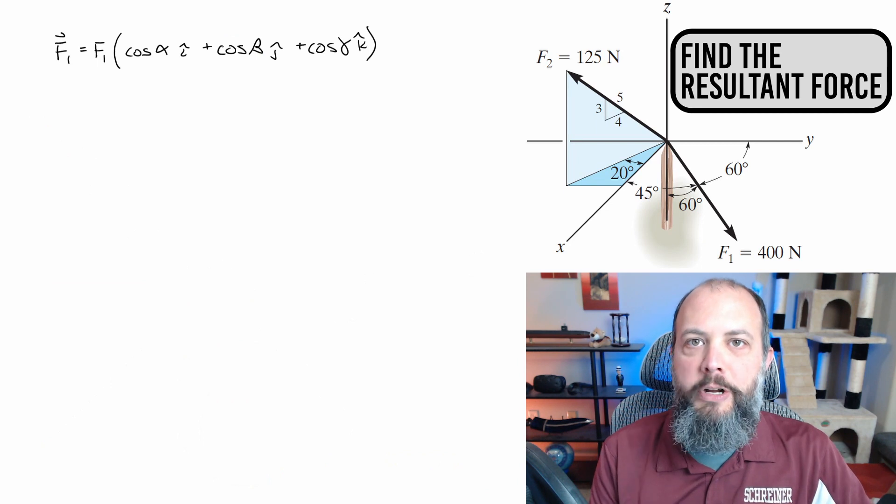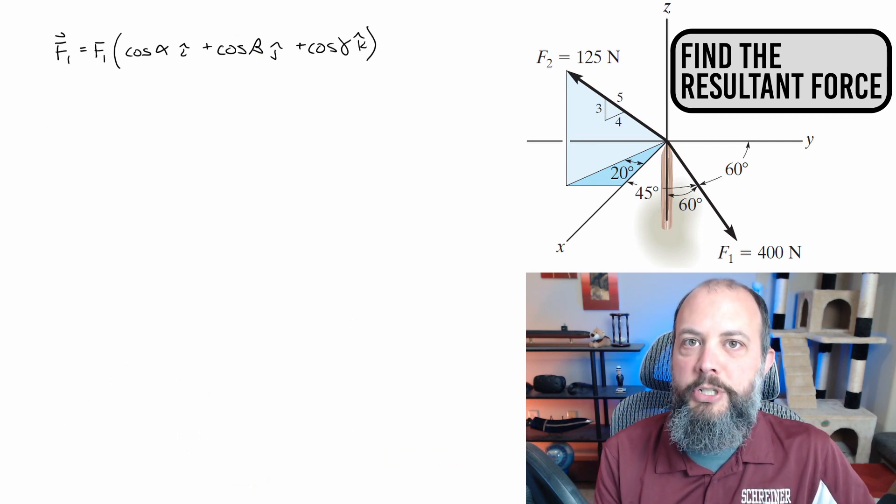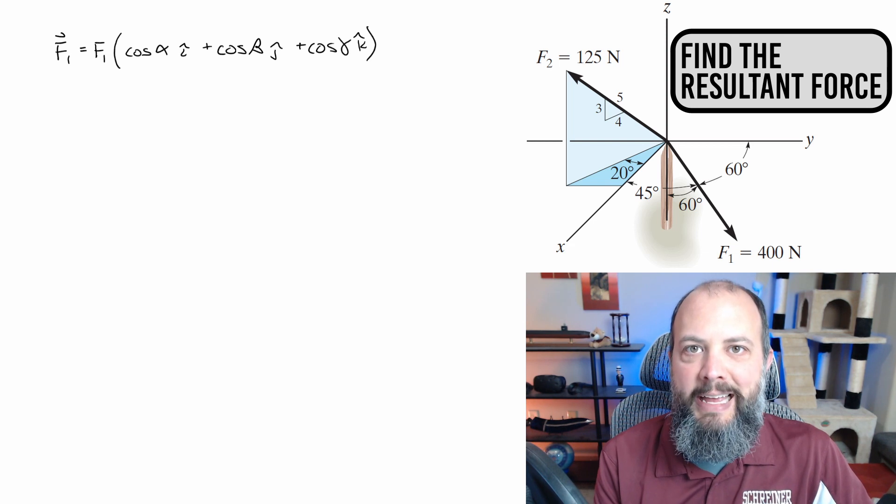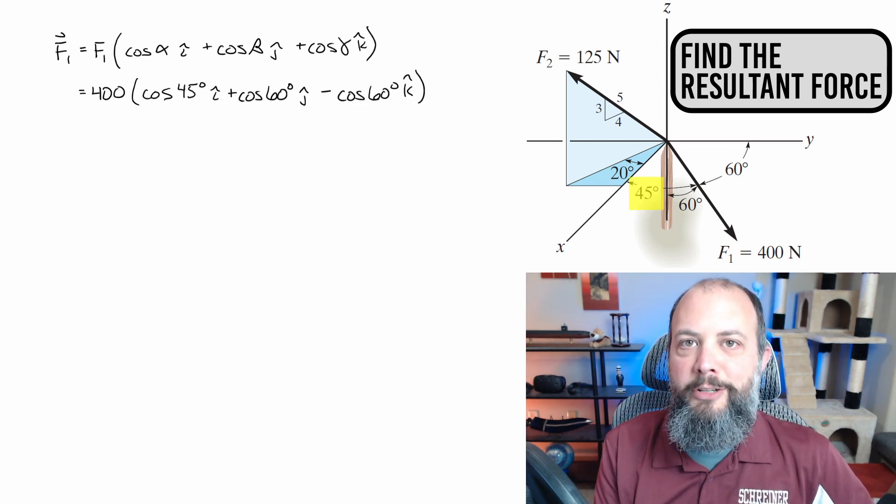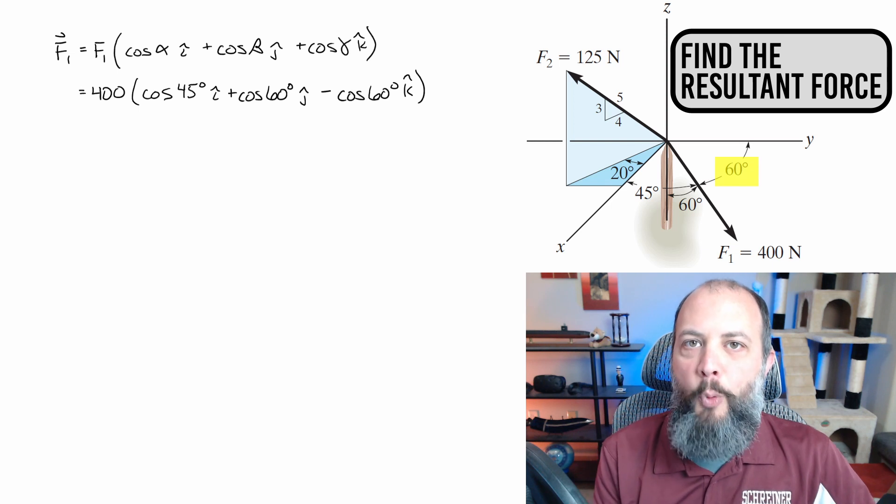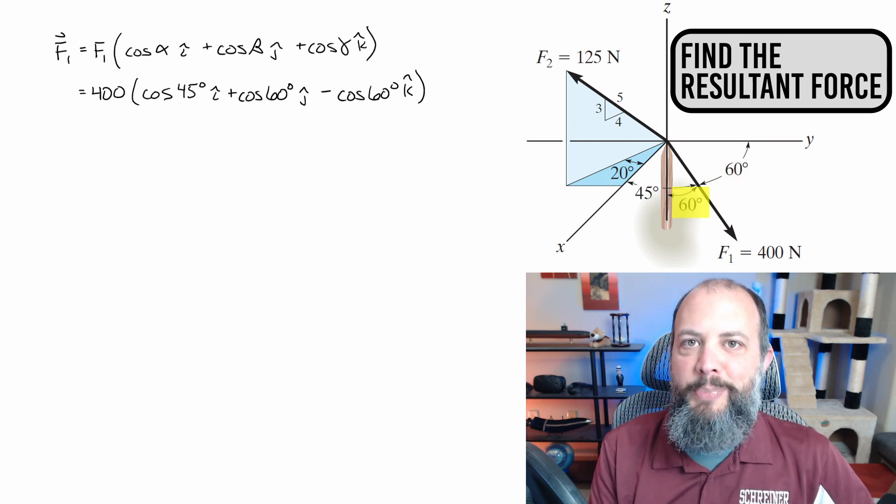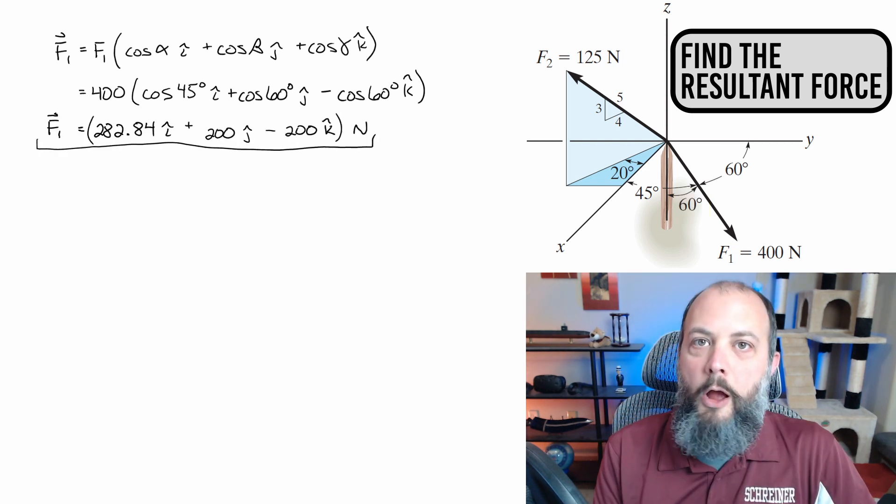Since I've provided coordinate direction angles for F1, I can get to Cartesian form just using cosine of each of those three angles. The 45 degree angle is pointing to the positive X axis, 60 degree angle pointing to the positive Y axis, and then I'm subtracting the Z component because the other 60 degree angle is pointing to the negative Z axis.